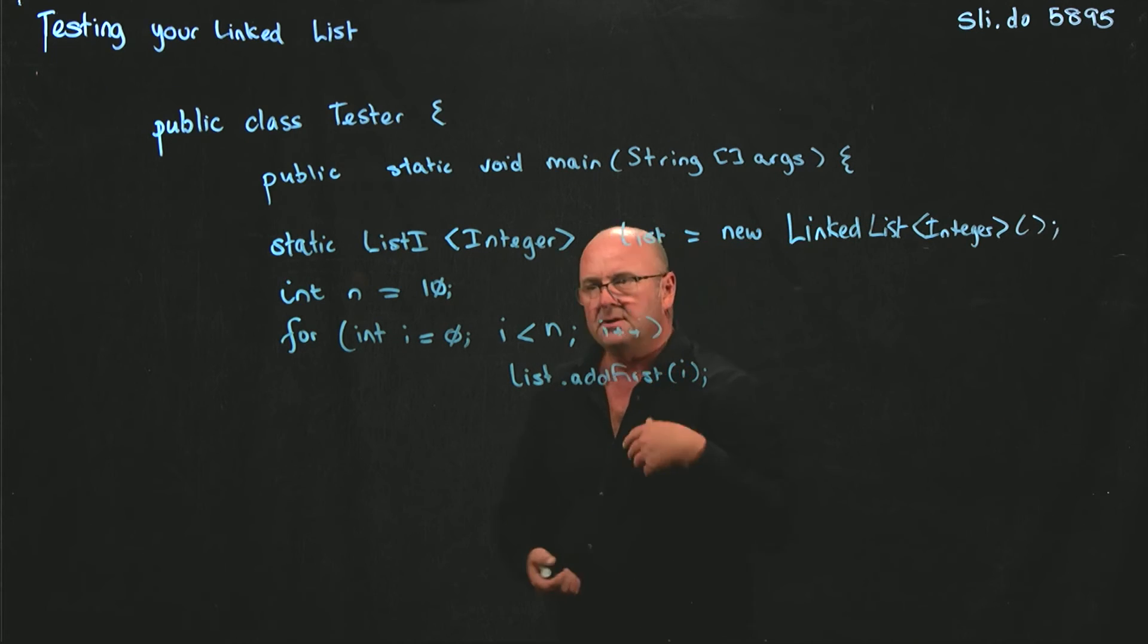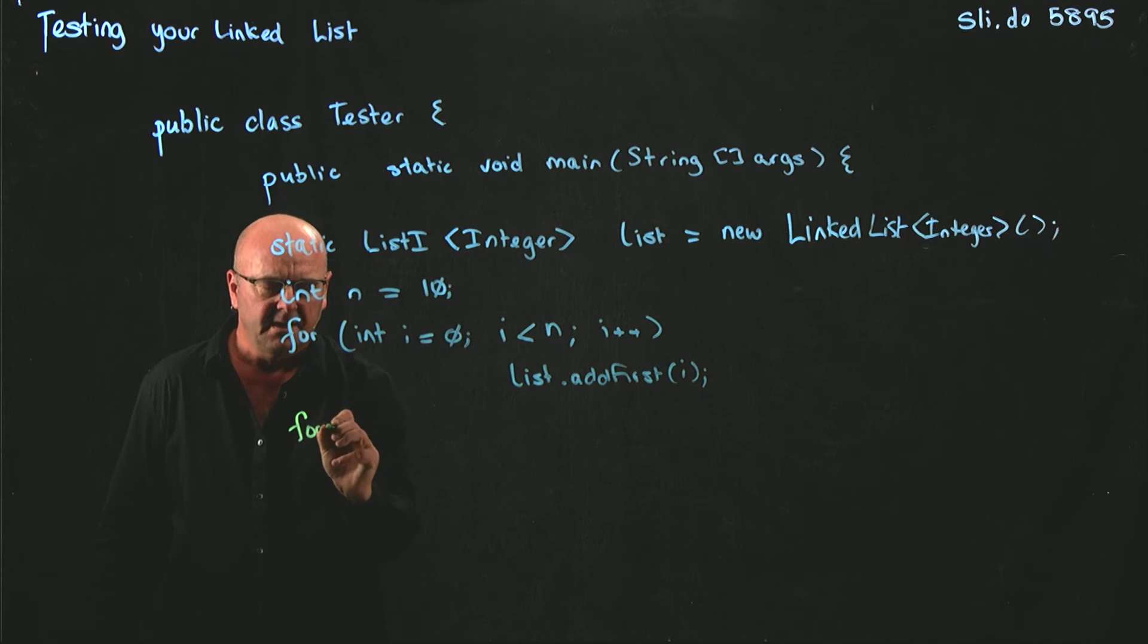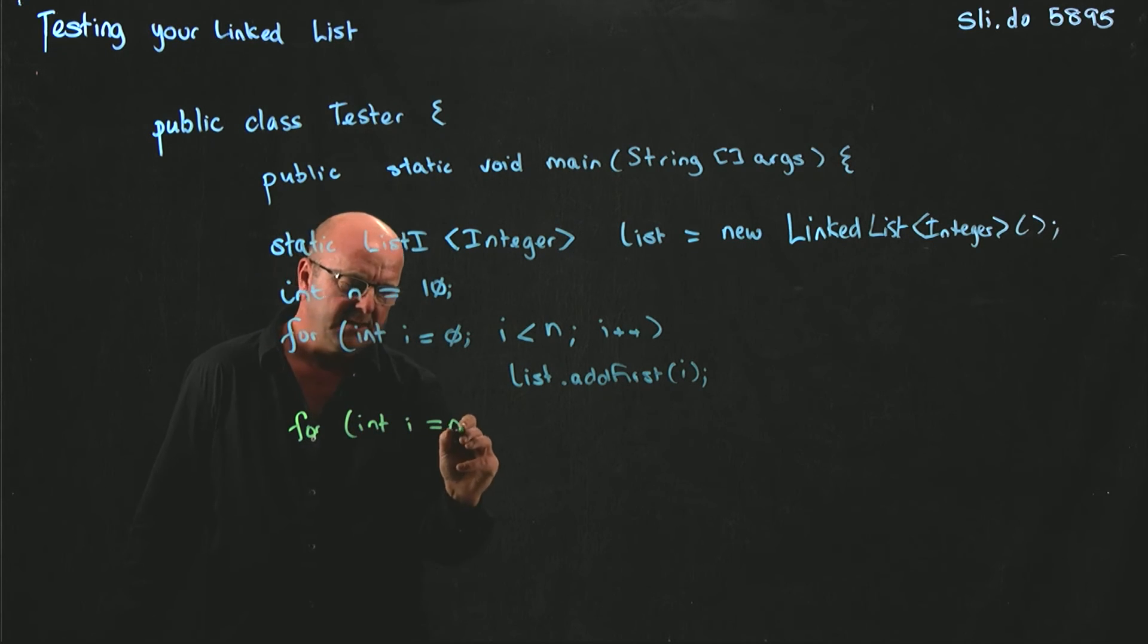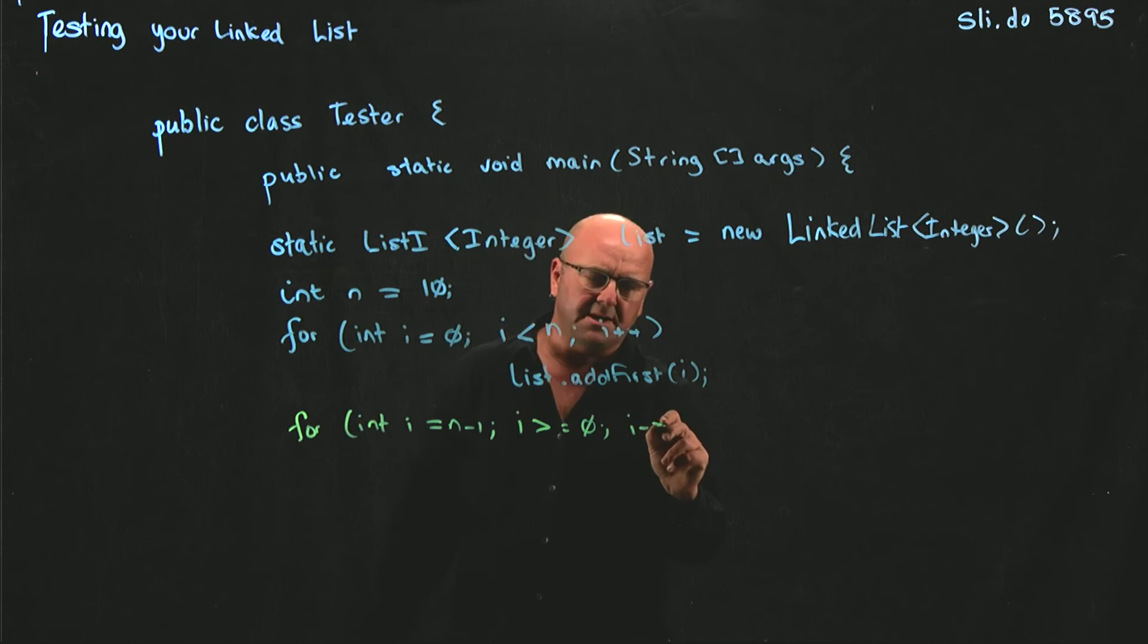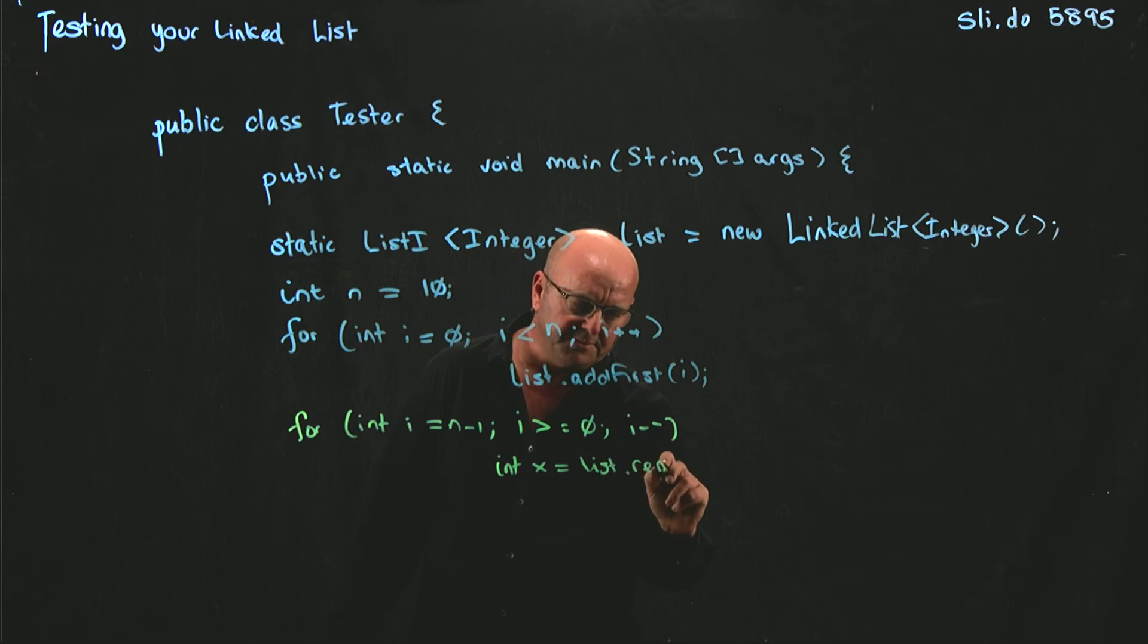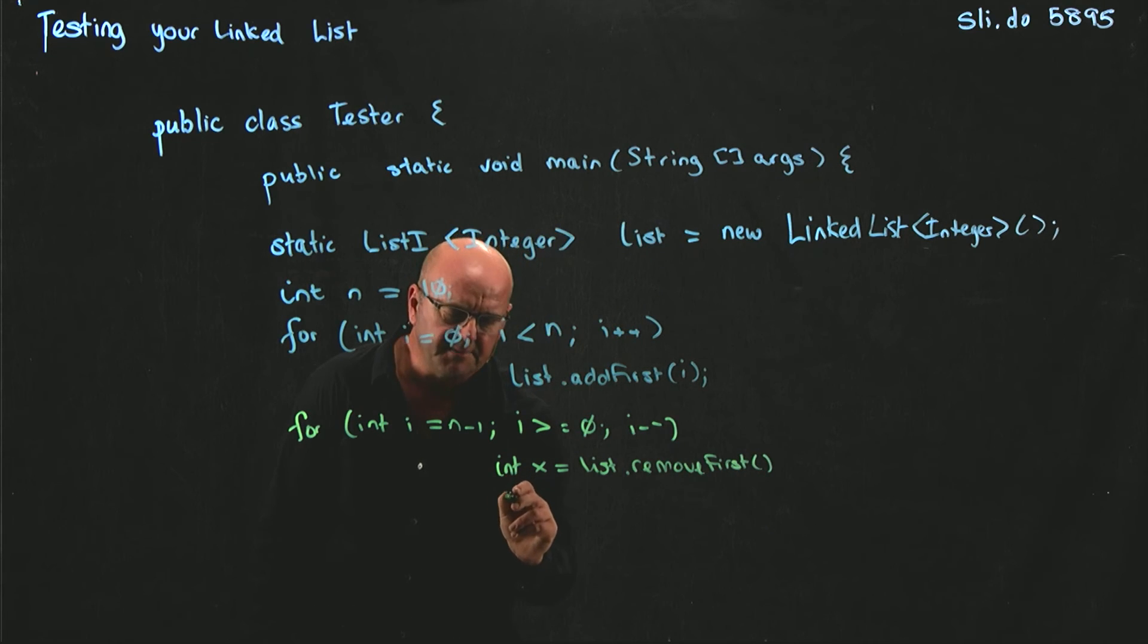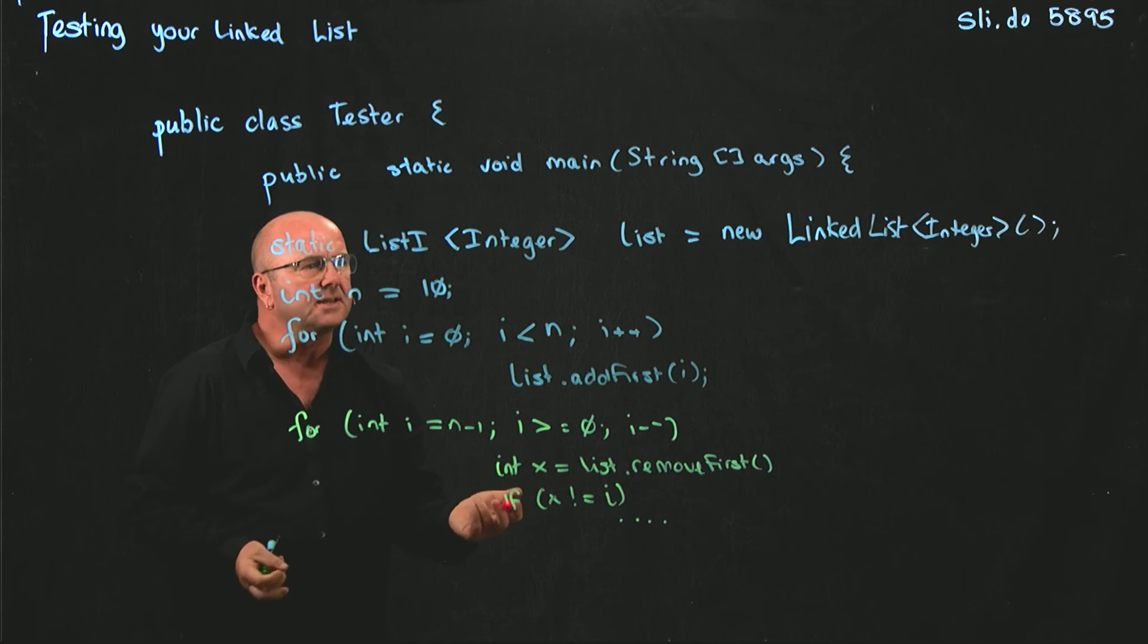So we can now try a couple of different ways to remove numbers. So we could, for example, say for int i equals n minus 1, i is greater than or equal to 0, i minus minus. And so now we're going to do list int x equals list.removeFirst. And we should then be able to check if x and i are not the same. So that's testing our remove first method.